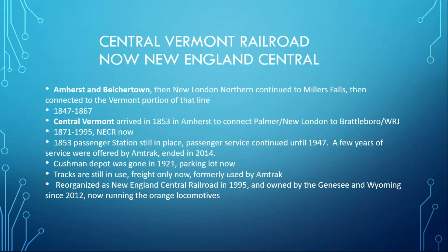The Cushman Depot — we call it North Amherst, but it's actually the Cushman neighborhood — was gone in 1921 and is now a parking lot. The tracks are still in use for freight only, formerly used by Amtrak. Reorganized as the New England Central in 1995, now owned by the Genesee and Wyoming since 2012. And they run those big orange pumpkin-looking locomotives. There's a picture of that brick station — it's a really nice station. I've been inside it.